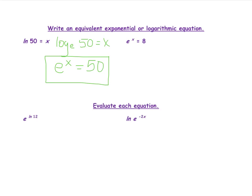Now let's look at e to the x power equals 8, and change it to a natural log function. When we had exponential functions that we changed to log, we know we start with a log. The base of this exponential is e, so that's the base of our log function, and 8 is our argument. So it's log base e of 8, and the exponent becomes our answer. Simplifying, we change log base e to natural log: the natural log of 8 equals x.